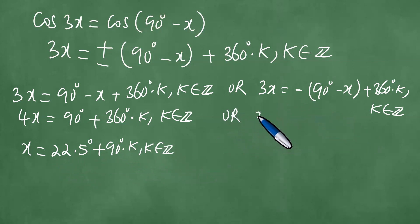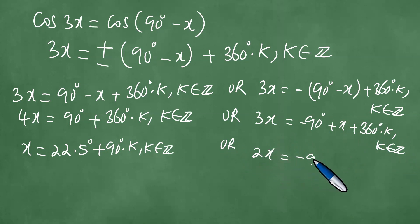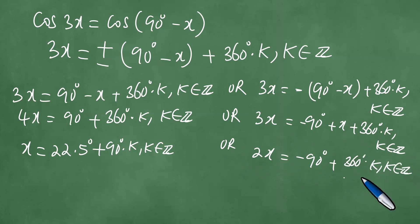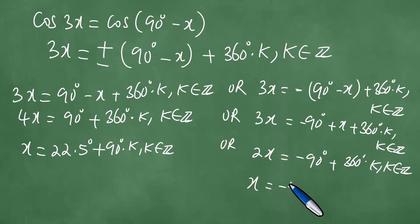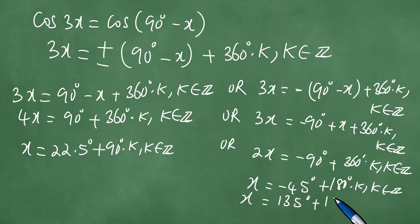Or, distributing with the minus, we have 3x equals minus 90 degrees plus x plus 360 degrees times k, where k is in Z. Transposing x to the other side gives 2x equals minus 90 degrees plus 360 degrees times k, where k is an element of Z. Dividing both sides by 2 gives x equals minus 45 degrees plus 180 degrees times k, where k is an element of Z. Upon further examination, this can be written as 135 degrees plus 180 degrees times k, where k is an element of Z.